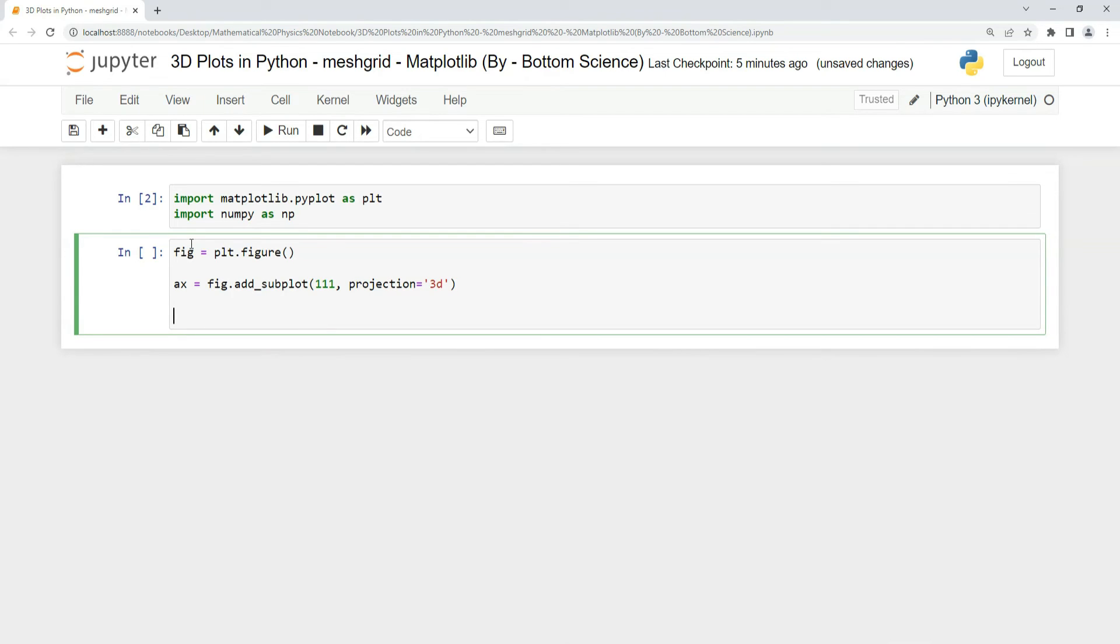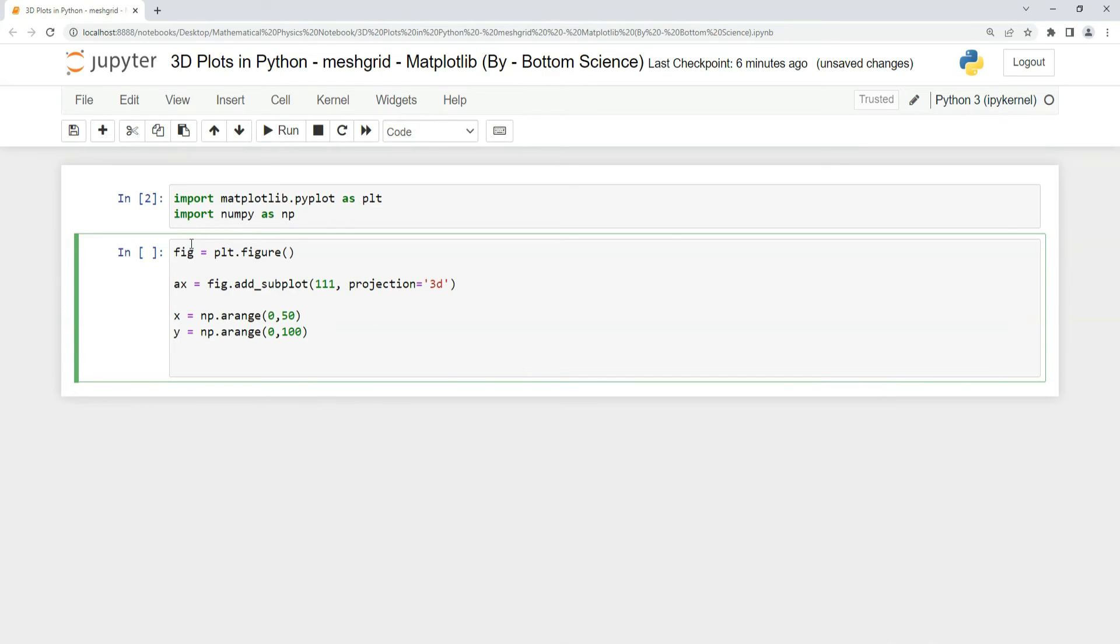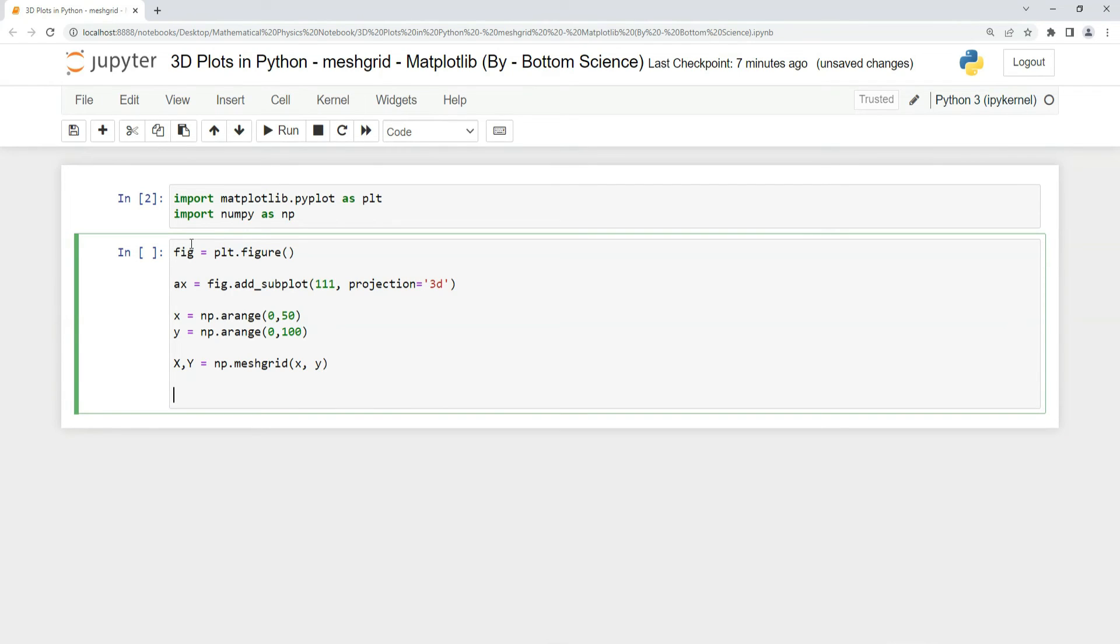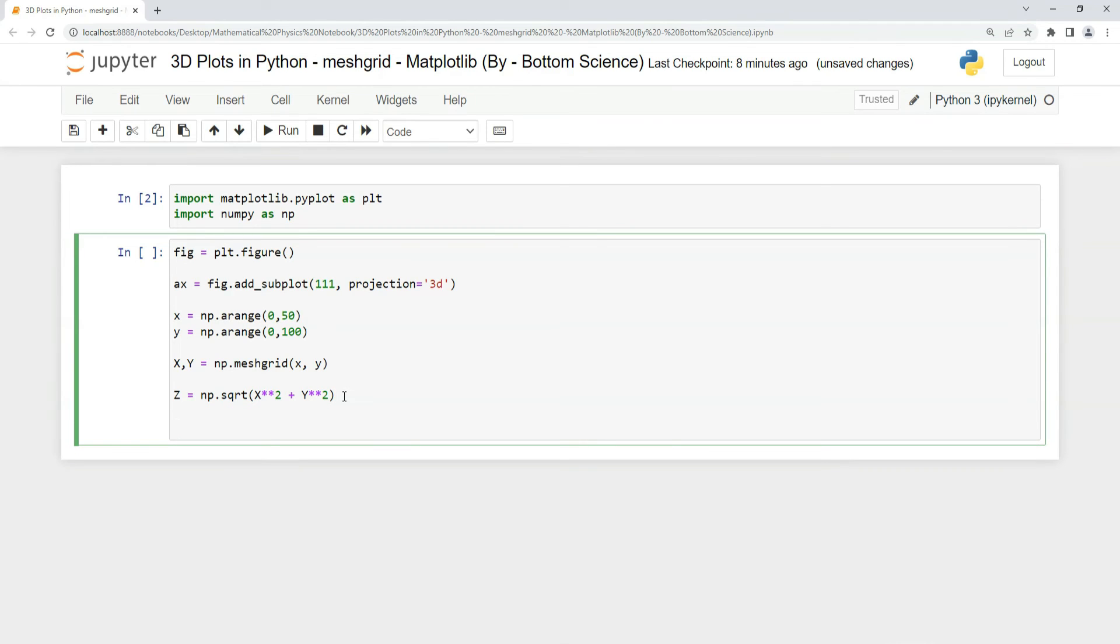Let's create two-dimensional arrays X and Y, and now we'll use our meshgrid function. After this, you can use any equation you want to plot. For example, I'm using z equals square root of x squared plus y squared. This is the equation we want to plot in 3D. We define the 3D surface using ax.plot_surface.